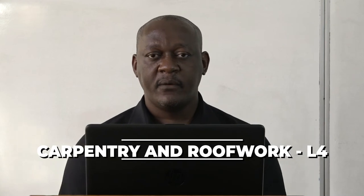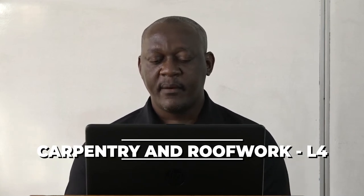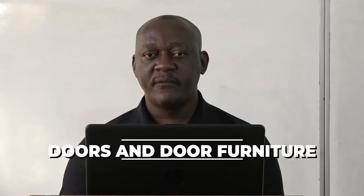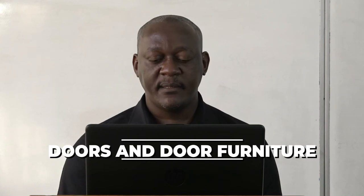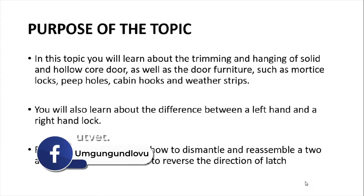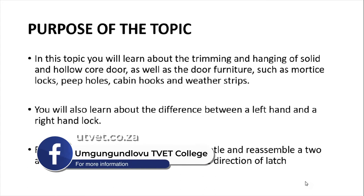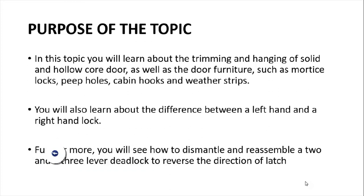Hello, welcome to NCV Level 4 Carpentry and Roof Work. Our topic for today is doors and door furniture. I am Mr. V and Zumba. First we need to know the purpose of this topic. In this topic you will learn about the trimming and hanging of solid and hollow core doors, as well as the furniture such as the mortise lock, the peepholes, the cabin hooks and weather strips. You will also learn about the difference between a left-hand and a right-hand lock.